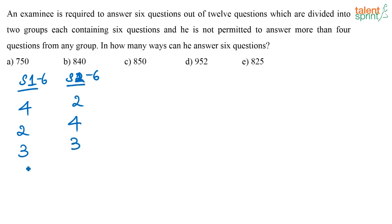If he were to answer only 1 question from one section, he would have to answer 5 questions from the other, which is not possible because the maximum he can answer from 1 section is 4. So the only possible cases are these three cases.